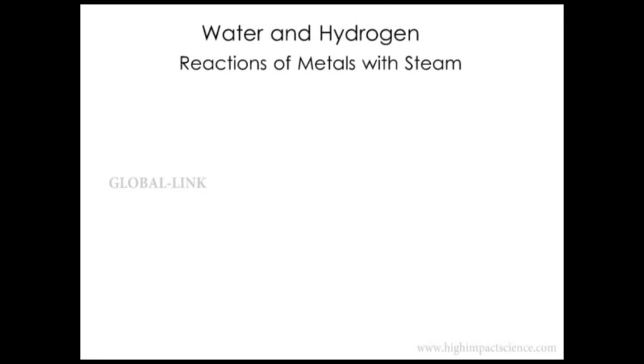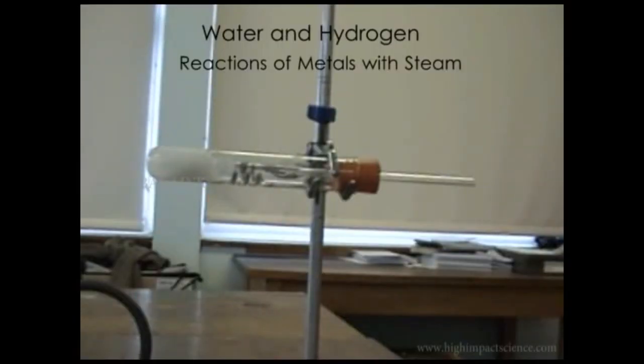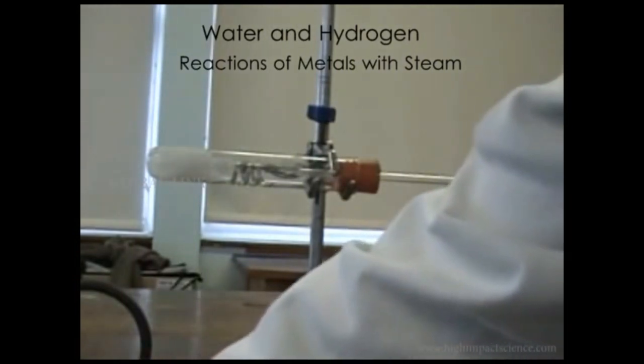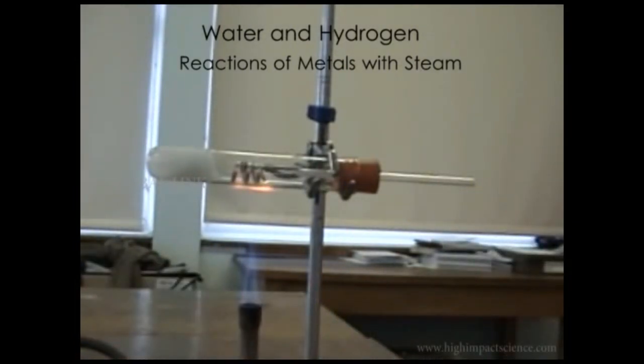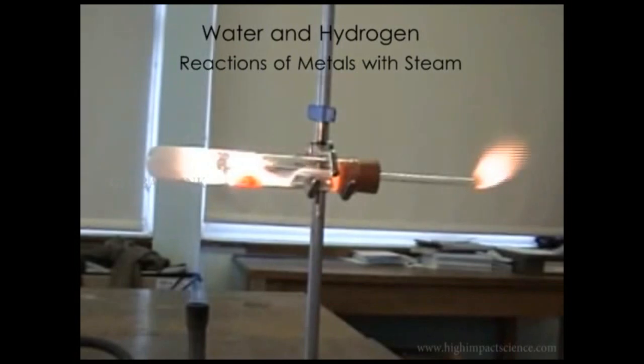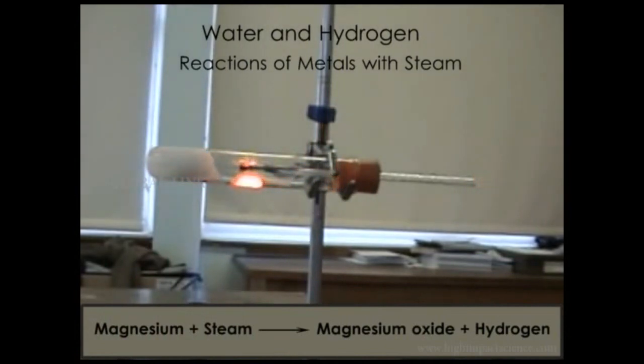For reactions of metals with steam, we saw that magnesium reacted quite slowly with cold water. Let's see what happens when steam is passed over a heated magnesium ribbon. We have a magnesium ribbon in a boiling tube. At the base we have cotton wool soaked with water. First we heat the magnesium ribbon until it starts to glow, then we heat the cotton wool to produce steam. You see the open end ignites when a flame is introduced. This is because magnesium reacts with steam to form magnesium oxide and hydrogen gas. The gas is ignited at that end.